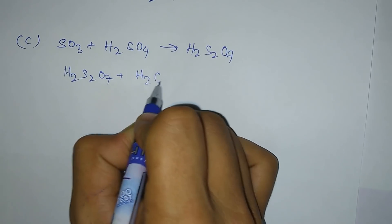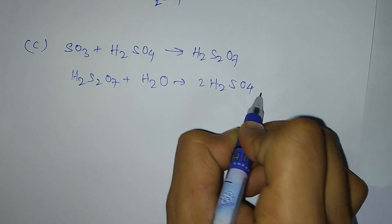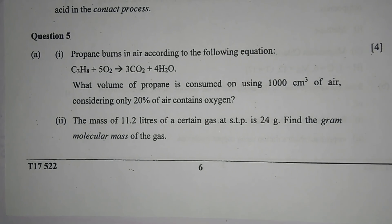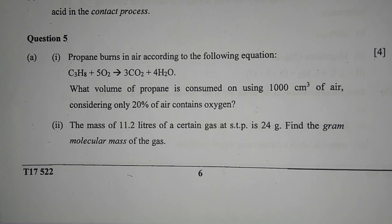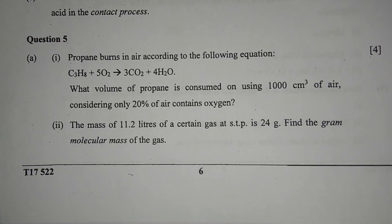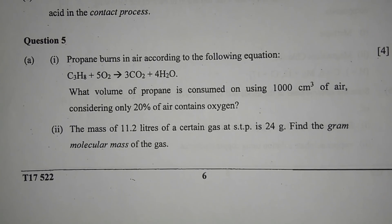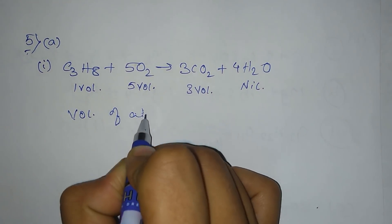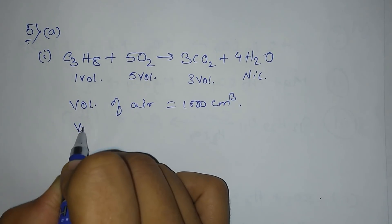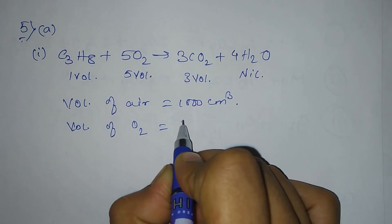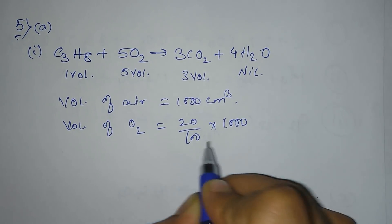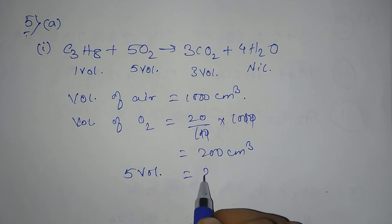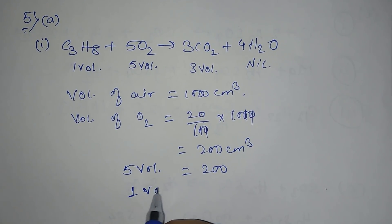Question 5a, part 1: propane burns in air according to the equation C3H8 + 5O2 → 3CO2 + 4H2O. What volume of propane is consumed using 1000 cm³ of air, considering only 20% of air contains oxygen? Volume of air = 1000 cm³, so volume of oxygen = 20% of 1000 = 200 cm³. By the equation, 5 volumes equal 200 cm³, so 1 volume equals 40 cm³. Thus the volume of propane is 40 cm³.